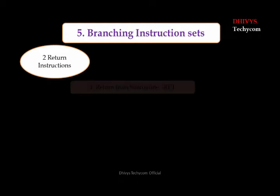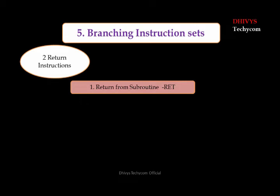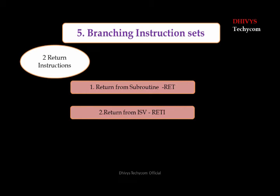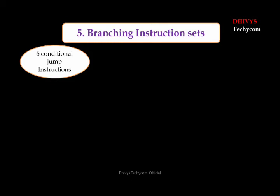Next are the return instructions. If there is a subroutine program, we have to return back — that is all about return instructions. The first is RET, return from a subroutine: if we are calling a subroutine and the program is completed, we use RET to return to the main program. The second is RETI, return from an interrupt. In 8051, ISR is the interrupt service routine — whenever an interrupt comes, it goes to the interrupt service vector address, and when returning from that interrupt, we use RETI.